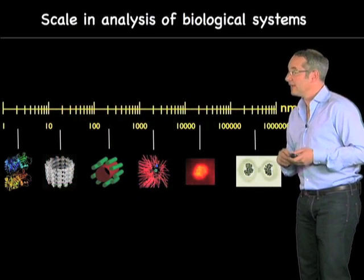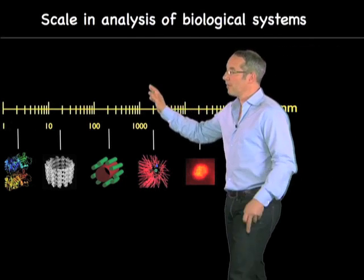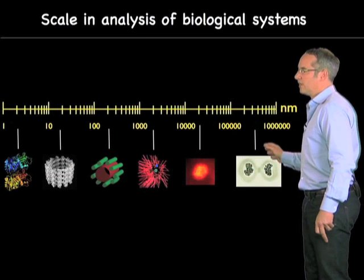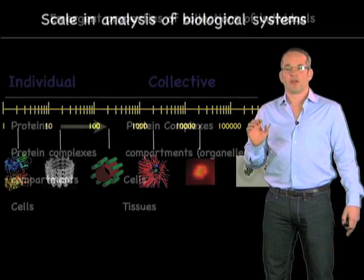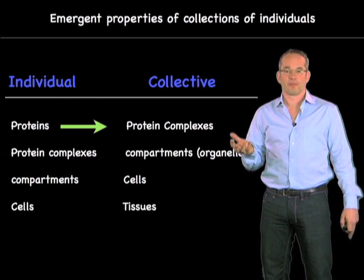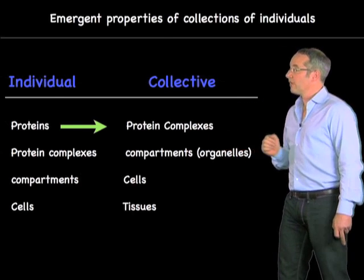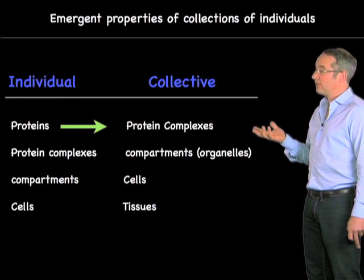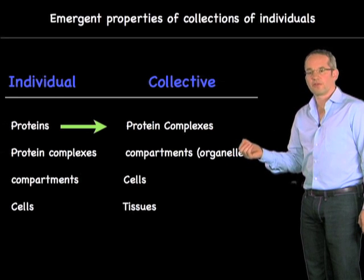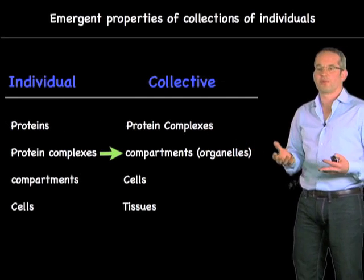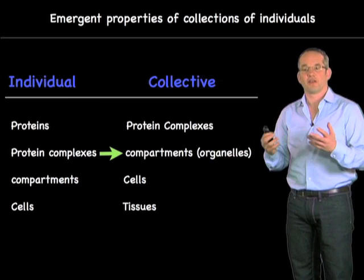So, we come back to our scale here. What I've done is show you how we can go from the proteins all the way to the cells and bridge that scale by understanding the organization of different compartments. One of the ways we think about that is emergent properties — the emergent properties of collections of individuals. The proteins themselves are individuals, and a collective, as an example, are protein complexes. We can try and understand what properties of protein complexes emerge from the collection of proteins that make them up. We can ask the same with protein complexes: put them together like a centrosome or a nuclear body, and ask what activities emerge from the combined activity of all those protein complexes.